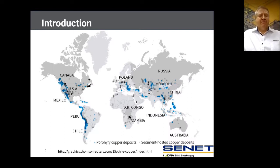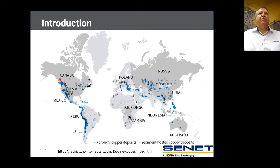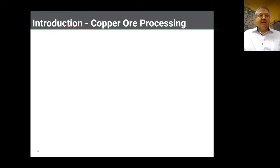Copper is mainly produced by Chile, Peru, China, the DRC, and the USA. And then I'll move directly into the copper processing.